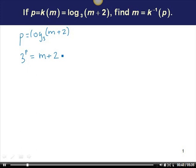To solve this equation for m now, all I need to do is subtract 2 from both sides of the equation. So 3 to the p minus 2 equals m. So we have m equals k inverse of p, which is 3 to the p minus 2.